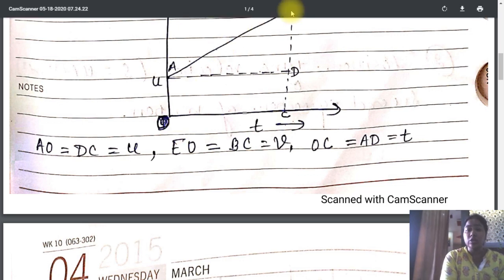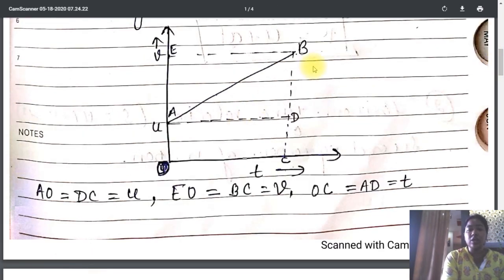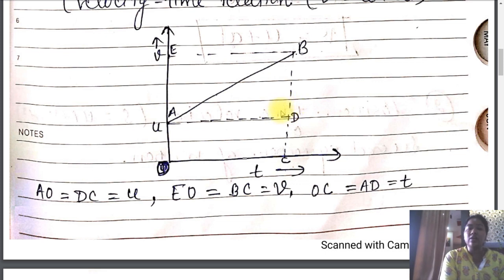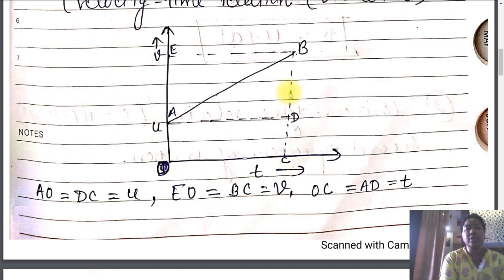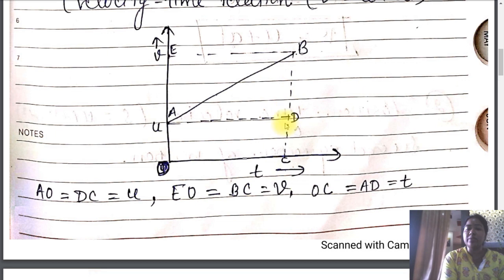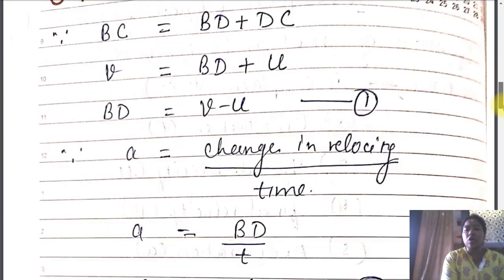For the triangle ABD, angle ADB is 90 degrees, so it is a right-angle triangle. By the formula, area equals one-half times base times height. From the diagram, AD is the base and BD is the height. So the area of the triangle is one-half times AD times BD.